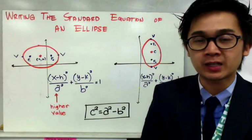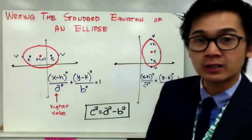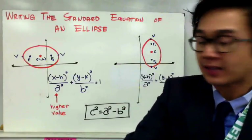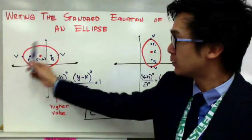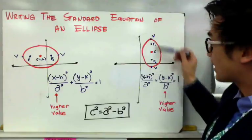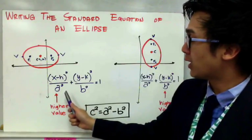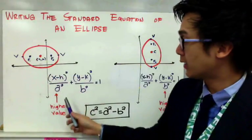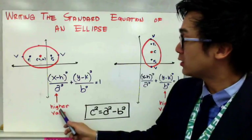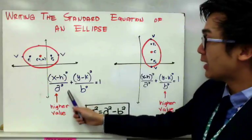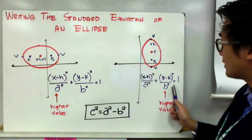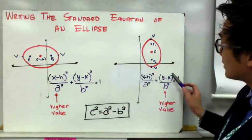Today we're going to learn how to analyze an ellipse given its parts. In an ellipse we have two sets of equations: one when the major axis is along the x-axis, and the other when the major axis is along the y-axis. In the standard equation with a major axis along the horizontal, the denominator for x will be a higher value. The bigger value under the squared term holds the major axis of the ellipse.